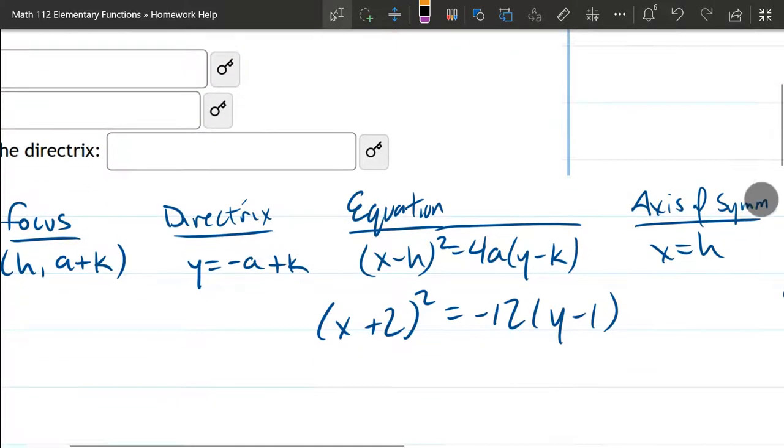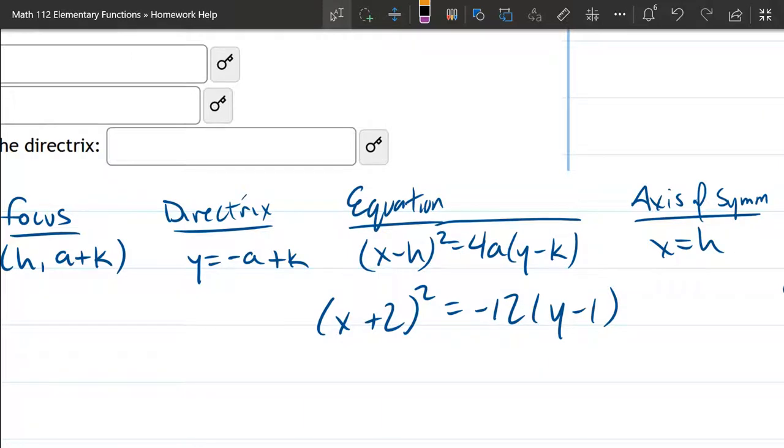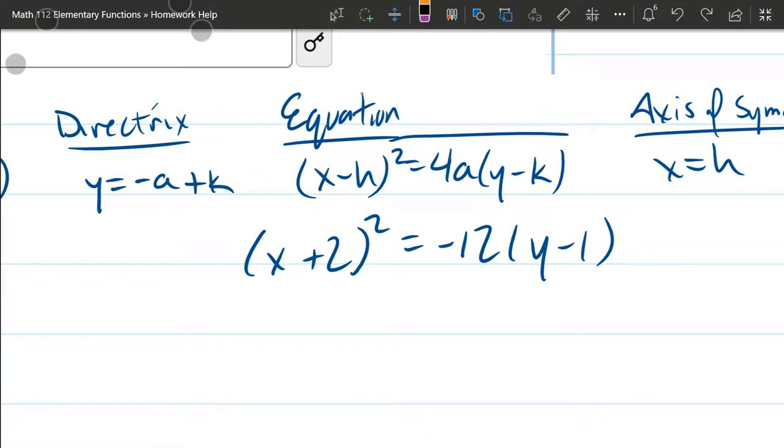Okay, so right away I can tell k equals 1. So we got k is taking the place of 1. Alright, let's look at some other things here. Alright, so I need to get negative h. So I need to force this to be a negative.